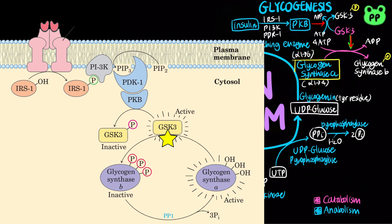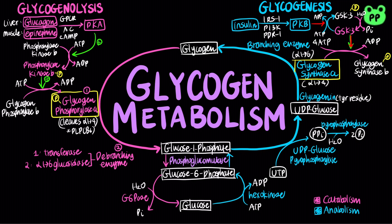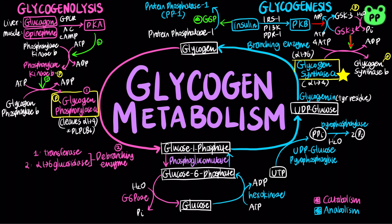In the absence of insulin, the active form of glycogen synthase kinase 3 will phosphorylate glycogen synthase A, primed by casein kinase 2. Phosphorylation of glycogen synthase A would deactivate it. Insulin also activates an important regulator known as protein phosphatase 1, which dephosphorylates glycogen synthase and activates it, promoting glycogenesis.